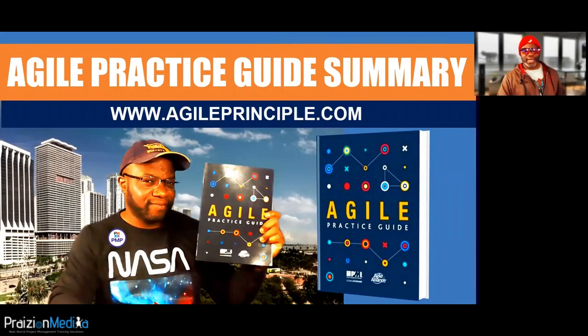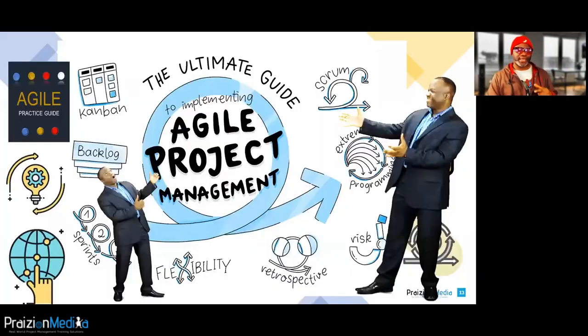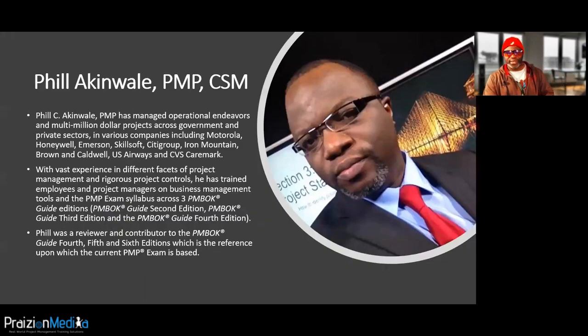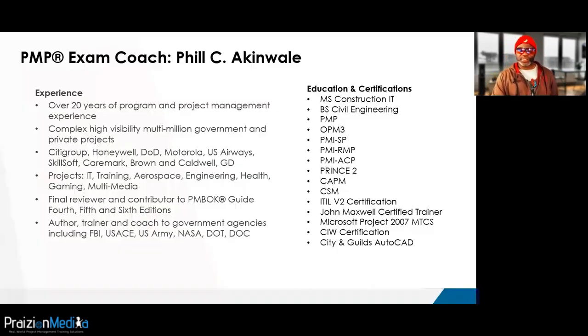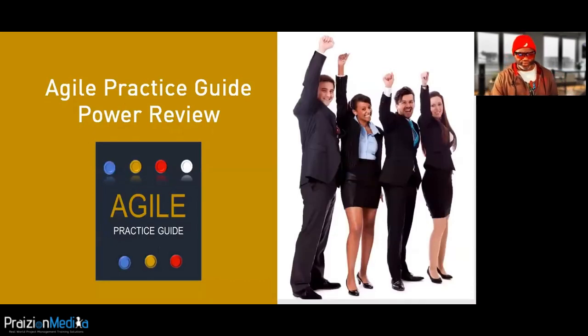The Agile Practice Guide Summary. What is Agile, first and foremost? Agile is a mindset. It is a way you should process the world around you, a way you should think, a way that you should pivot according to the world around you and what is happening. I've been a Scrum Master since 2011. I've got six certifications that are Agile-related and I'm very passionate about you understanding this guide.